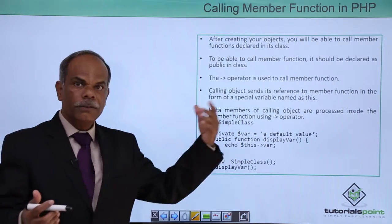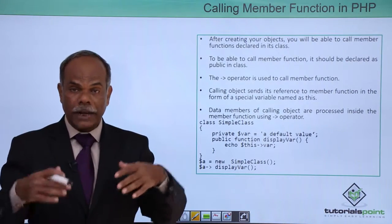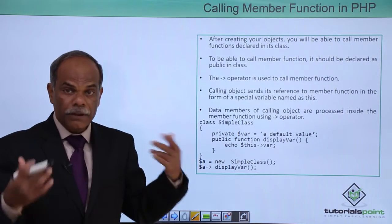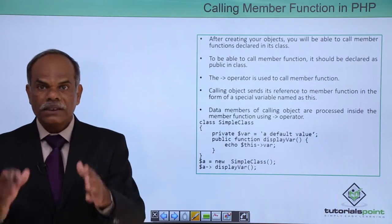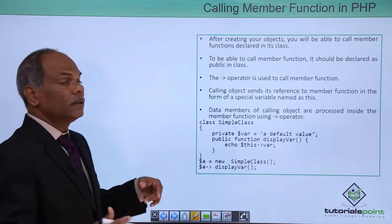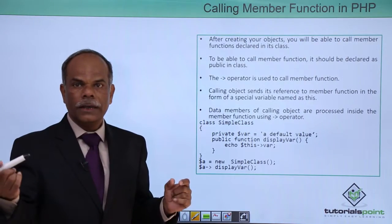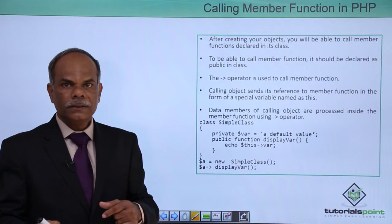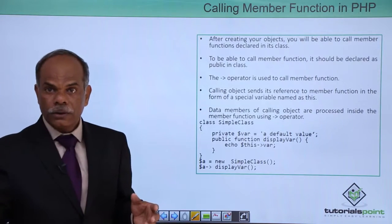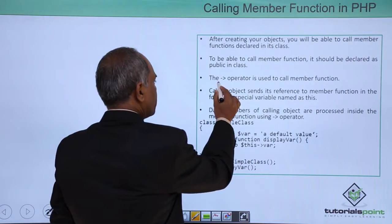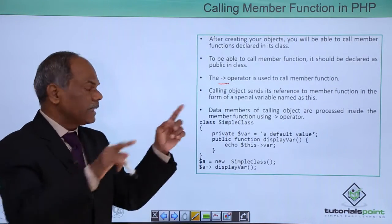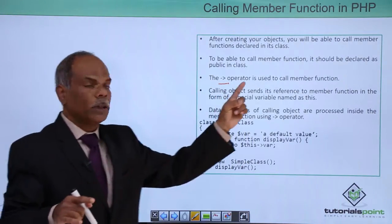Generally speaking, the member variables are declared as private, so direct access to the member variables will not be allowed. However, the functions are declared public, so you will be able to call the functions through the object. In order to refer to a member inside the class, when the object is created you can call the function. You have to refer to the function using this operator: dash and greater-than forms an arrow. Using this arrow operator, you can call the member functions.